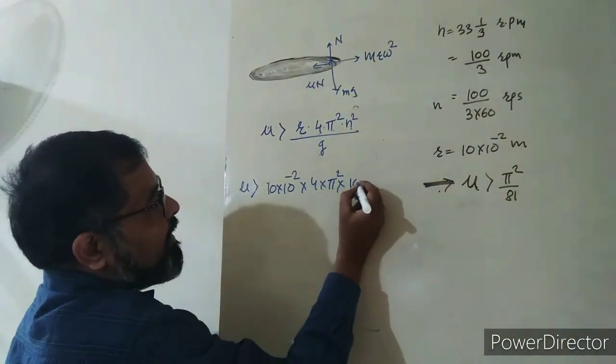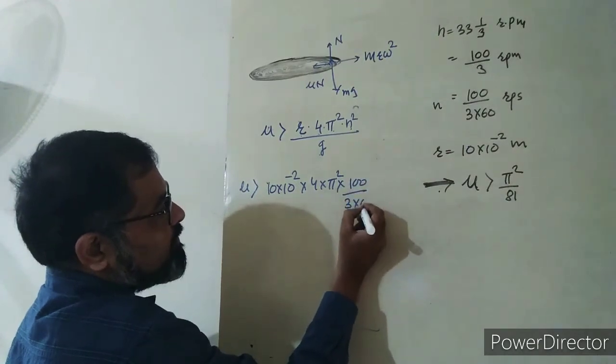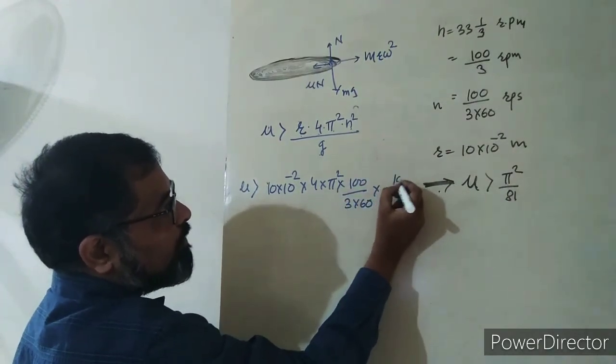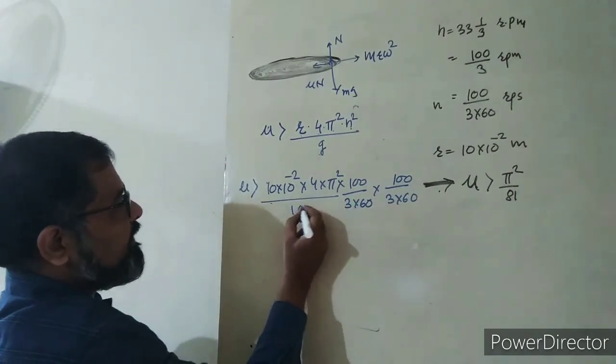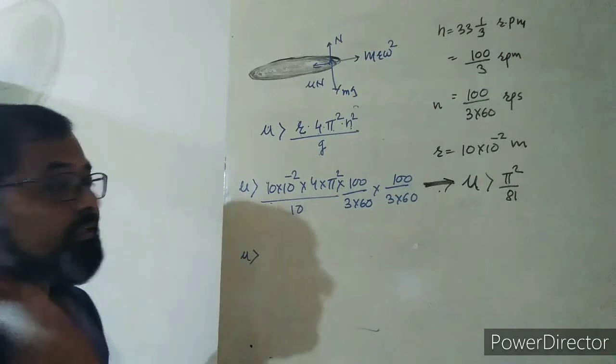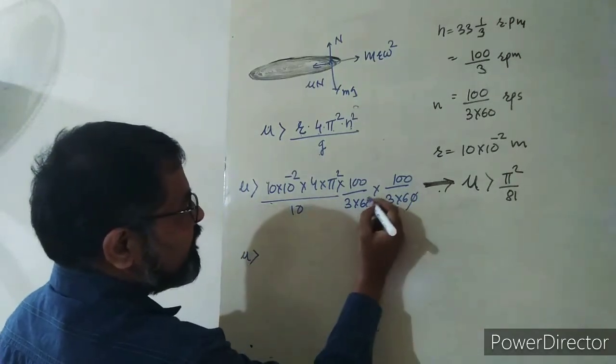Then 100/(3 × 60) and its square. We'll have to write it again, divided by g. Taking g = 10...